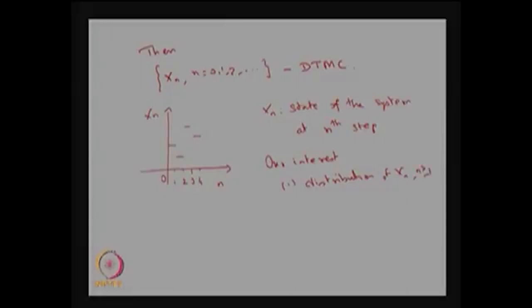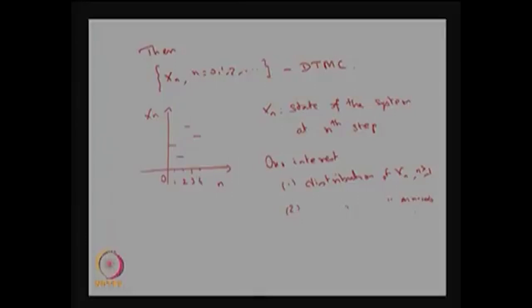You know where the system starts, so X0 is known. Your interest will be: what is the distribution of Xn — that is, what is the probability that Xn will be in some state j — and also what is the distribution of Xn as n tends to infinity. Both at any finite n and as n tends to infinity, that distribution is of interest.